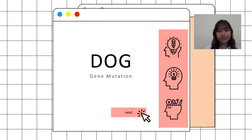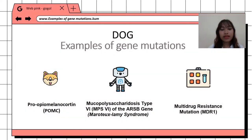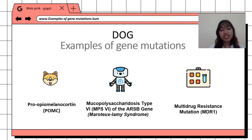Three examples of the gene mutation of the dog are: the pro-opiomelanocortin or the POMC; the mucopolysaccharidosis type 6 or the MPS6 of the ARSB gene, also known as the Maroteaux-Lamy syndrome; and the last one is the multidrug resistance mutation or the MDR1.